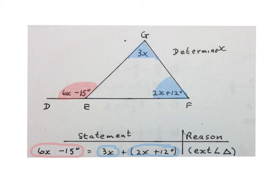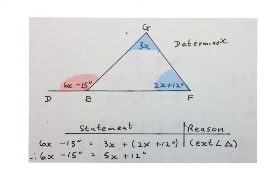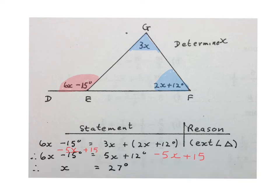We just solve for X with a normal equation. You can keep the left-hand side 6X minus 15. On the right-hand side we have 3X plus 2X is 5X plus 12. Then to solve for X, you minus 5X on both sides and you add 15 on both sides. The final answer: X equals to 27 degrees.